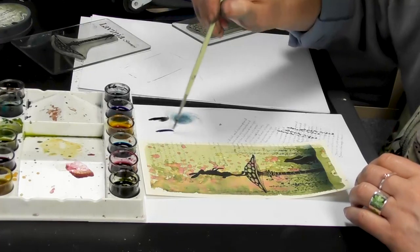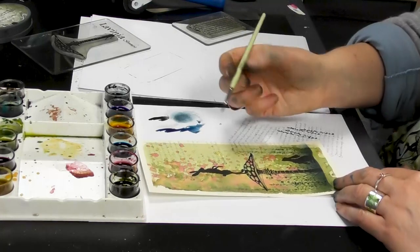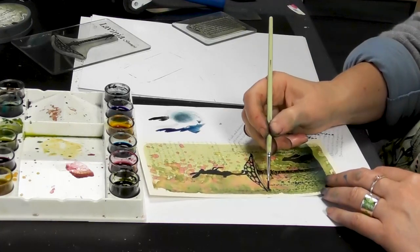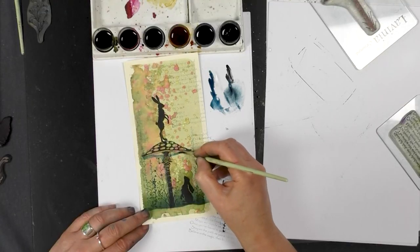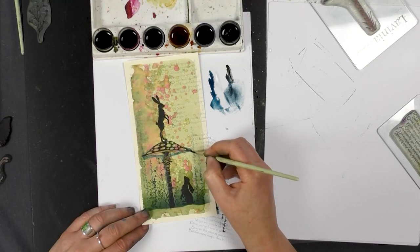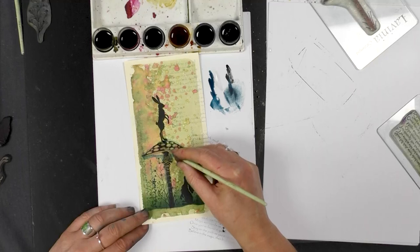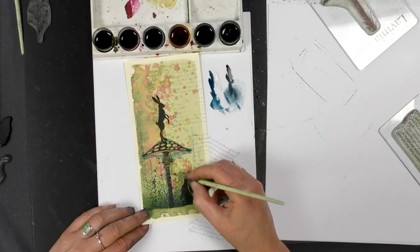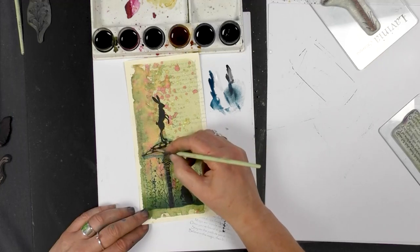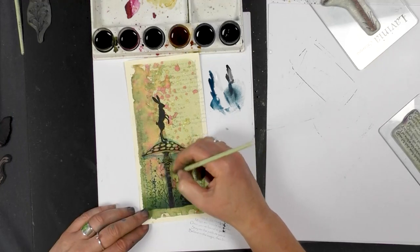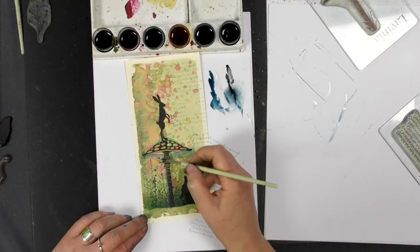I think I used the, yeah that's the Prussian blue which is quite a nice colour. And all I'm going to do is just go around the edge and it just pulls that lovely stamp out. They're all water-based colours so they work really nicely together.